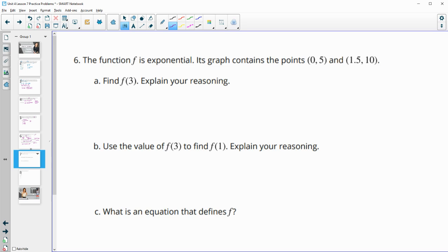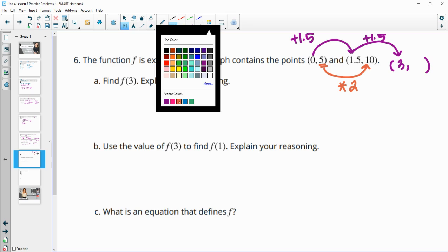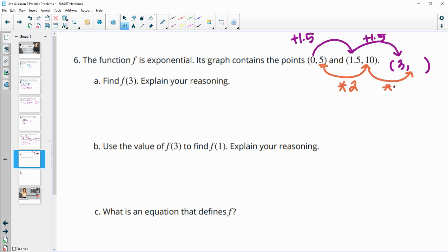Number six: the function F is exponential. Its graph contains the points (0, 5) and (1.5, 10). Find F of 3. We go up 1.5, and we can take a look at how much this output is growing. What factor is it growing since it's exponential? This is multiplying by 2 for an addition of 1.5 years. If we go up this same interval, another 1.5 years, we would be at 3. We should increase the output by a factor of 2 again. 10 times 2 would be 20, so F of 3 equals 20.